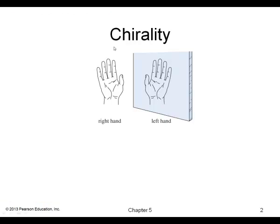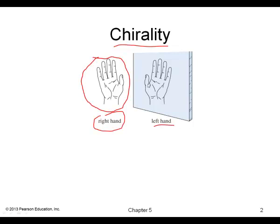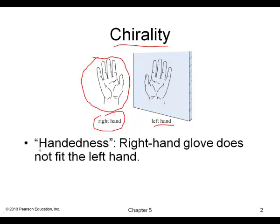In stereochemistry, one of the first concepts we have to understand is that of chirality. The word chirality comes from the word 'kairos,' which means hand in Greek. If you take your right hand and put it in front of a mirror, the reflection — the mirror image — would be your left hand, and your left hand is not the same as your right hand. So we say that if an object produces a mirror image that is different from its original, then that object is chiral, or we say it has handedness.